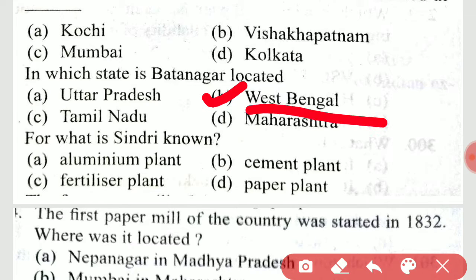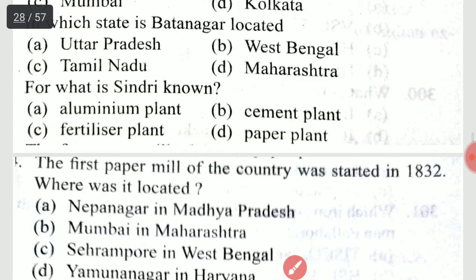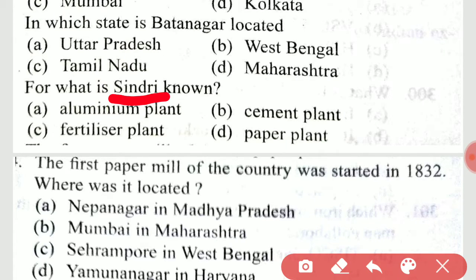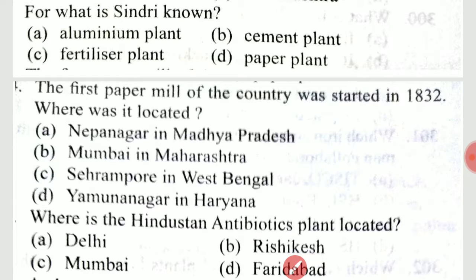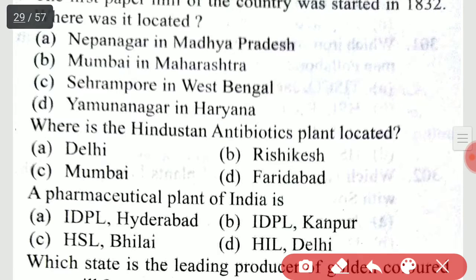In which state is Bhatanagar located? It is in West Bengal. What is Sindri known for? Sindri is known as a fertilizer plant. The first paper mill of the country was started in 1832 — where was it located? It is located in Serampore in West Bengal. Where is the Hindustan Antibiotics plant located? It is located in Pimpri (Pune).